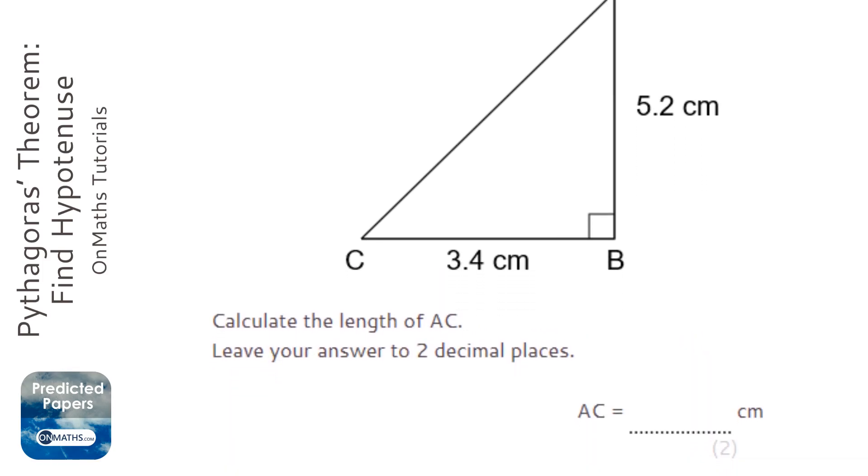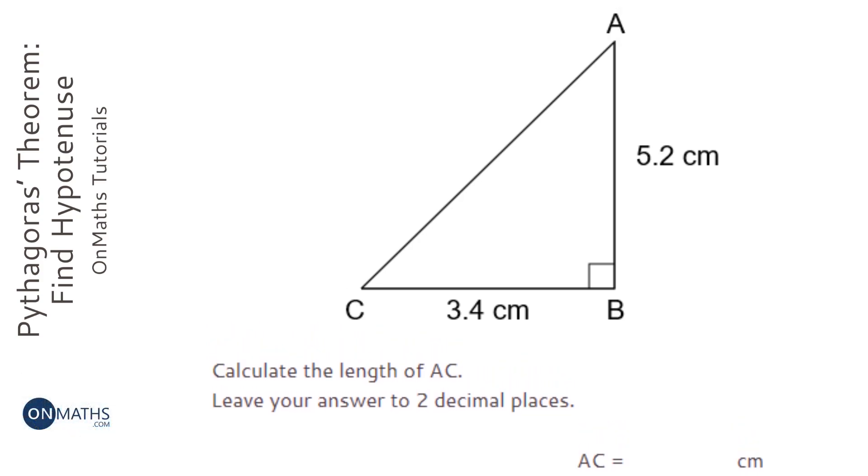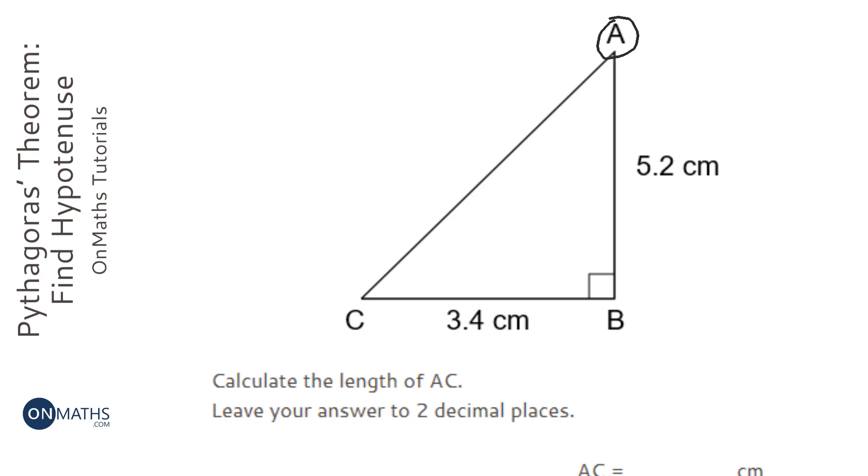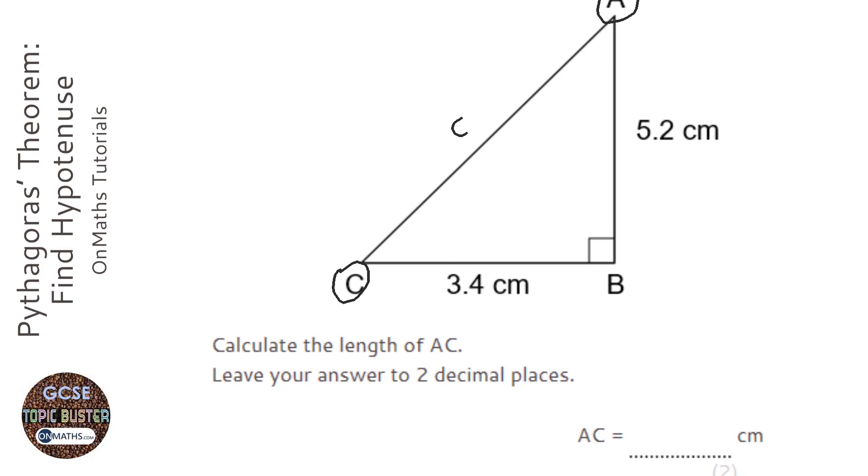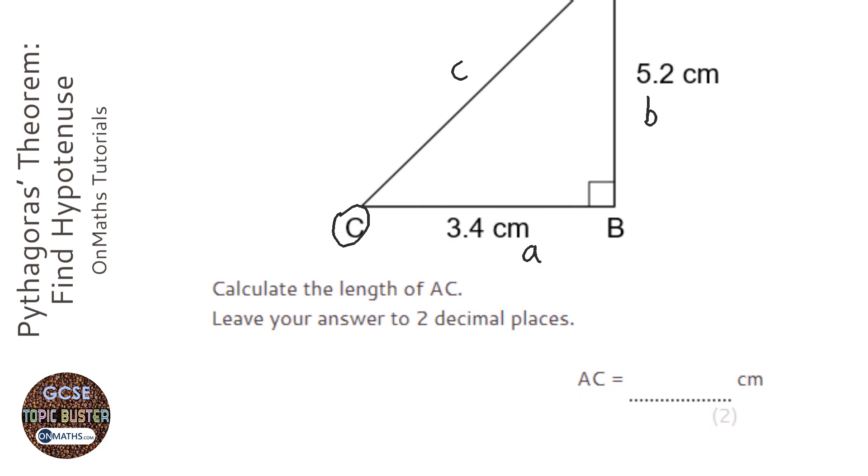Okay, so we have a right angle triangle and we're asked to find the length AC. So it's the length between A and C, and I'm going to label that as little c, and I'm going to label these two sides as little a and little b. And when we have two sides in a right angle triangle and we're trying to find the third side, we use Pythagoras.